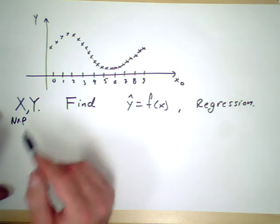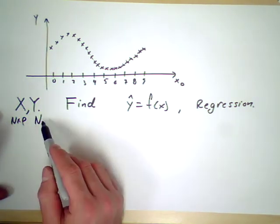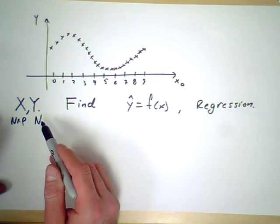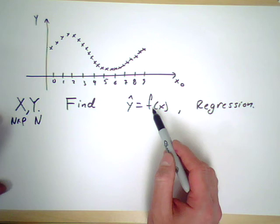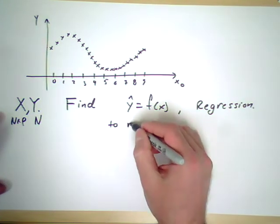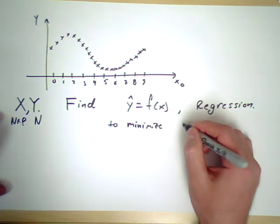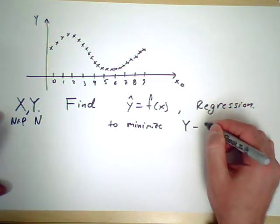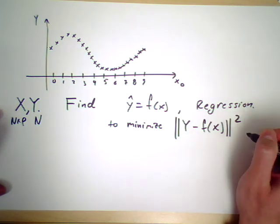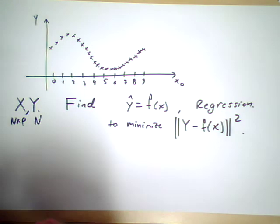So you have p predictors and in this case one response variable, and you have n data points total. And of course the goal for regression is to develop a function which predicts y based on x to minimize ||Y - f(x)||² in terms of residual sum of squares.